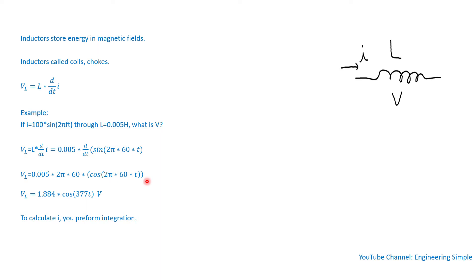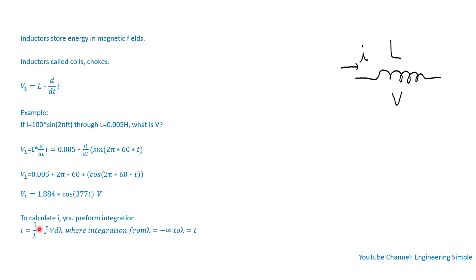If you have voltage and would like to calculate current, you use this equation: voltage equals inductance times derivative of current with respect to time — basically the inverse via integration. You take the integration of the voltage, which is 1 over inductance times the integral of voltage dλ, where λ goes from minus infinity to some value t.